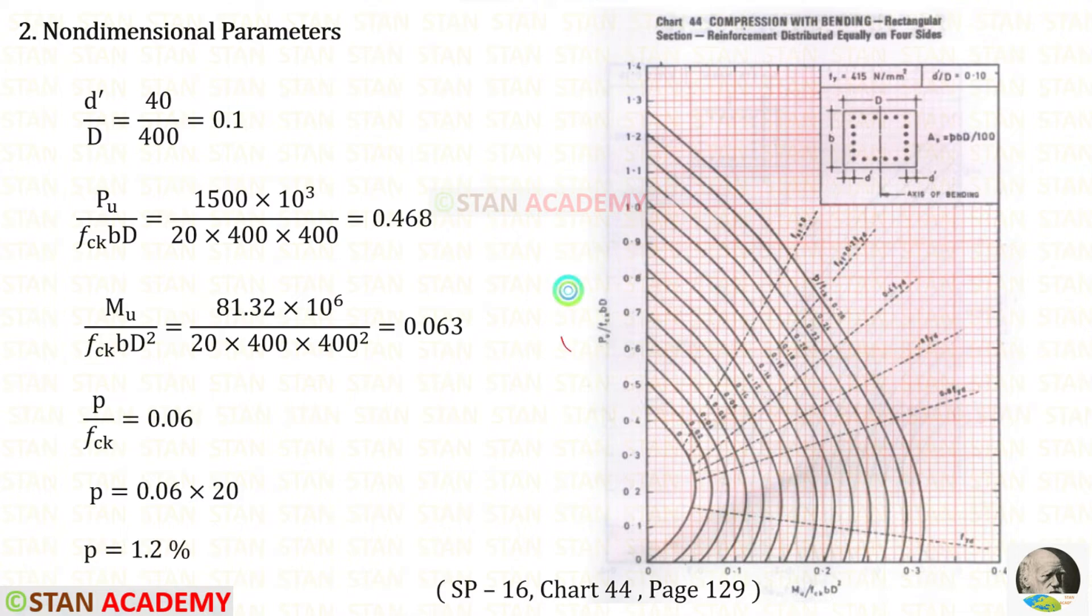From the chart, we can write these two expressions. We can apply all of the values so that we will get these. Now using these two values, we can find P upon FCK. When we draw the horizontal line using this value and when we draw the vertical line using this value, both of them intersect in this point. In this point, there is the curve 0.06. So P upon FCK is 0.06.